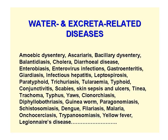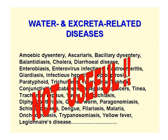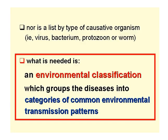This is a list of water and excreta related diseases, and you should recognize some old friends here like cholera and diarrhea. But actually such a list is not remotely useful, nor is a list which lists the causative organisms by biological type — that's to say whether they're viral, bacterial, protozoan or worm diseases. What we as engineers need is an environmental classification which groups together the diseases into categories which have a common environmental transmission pattern.